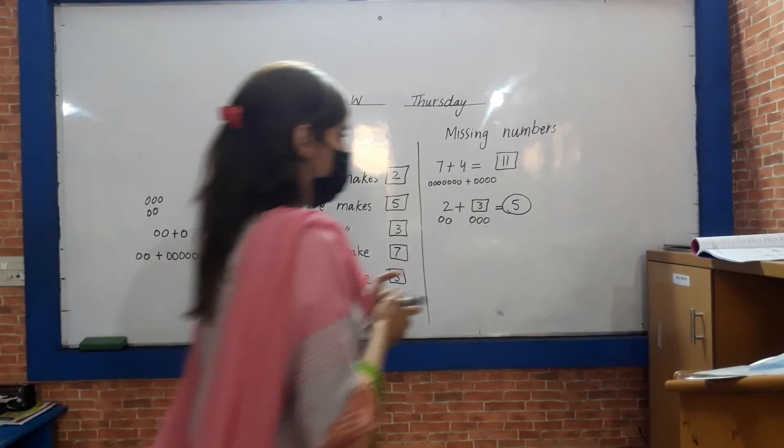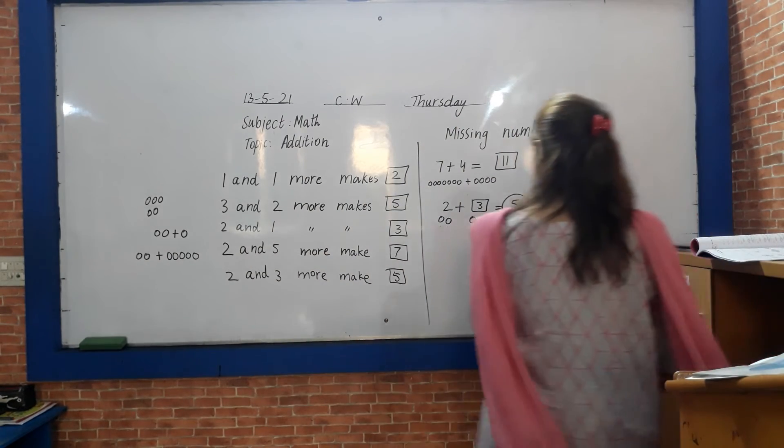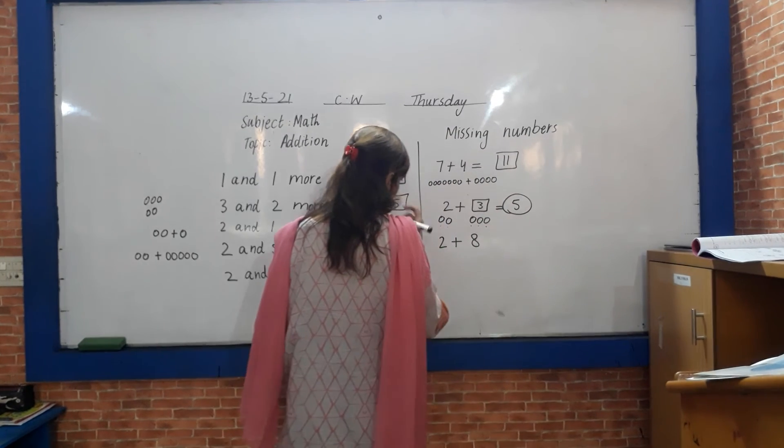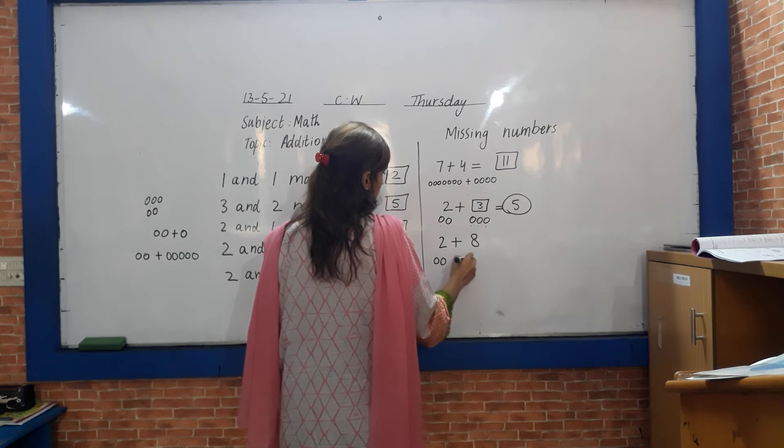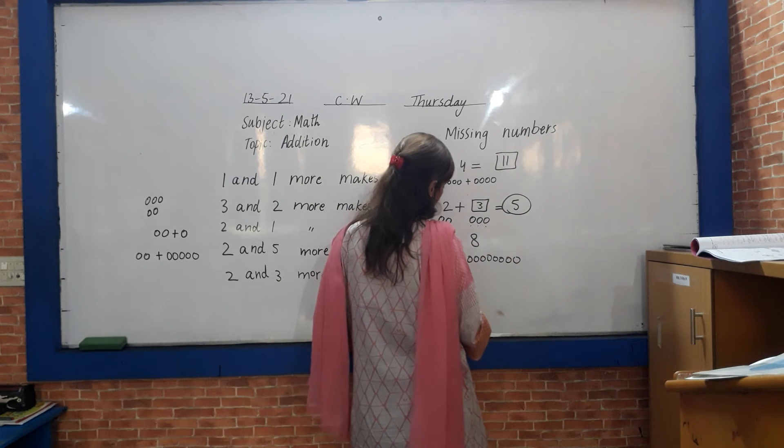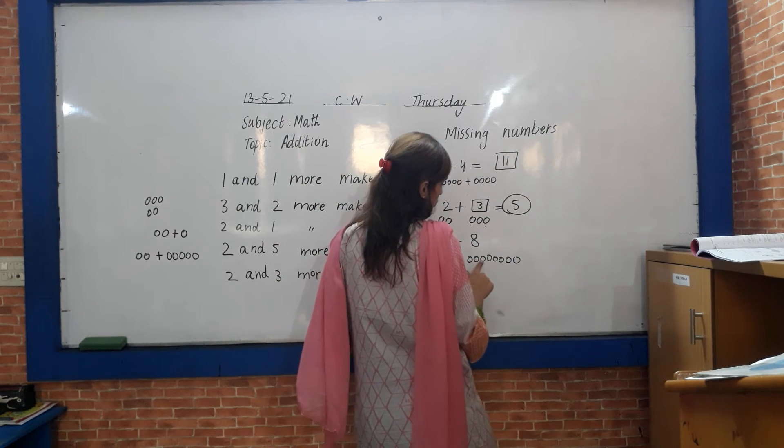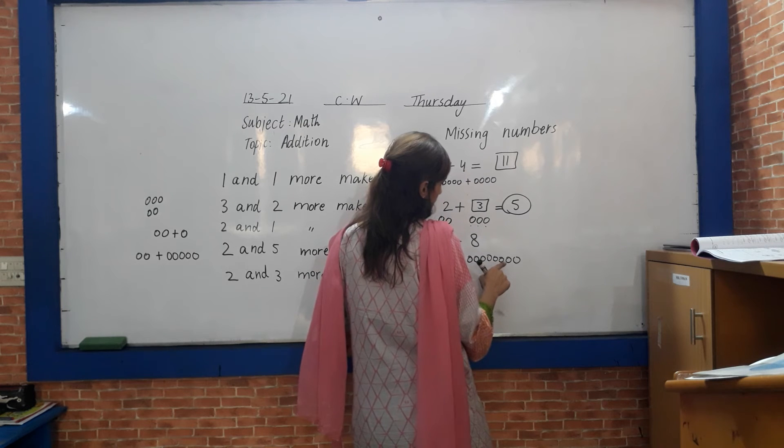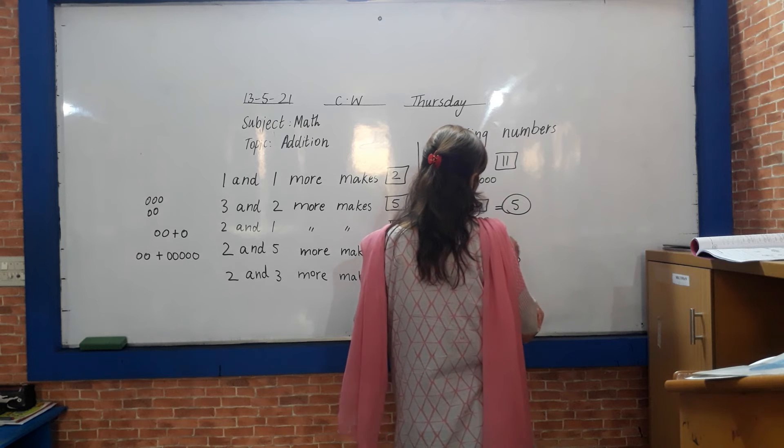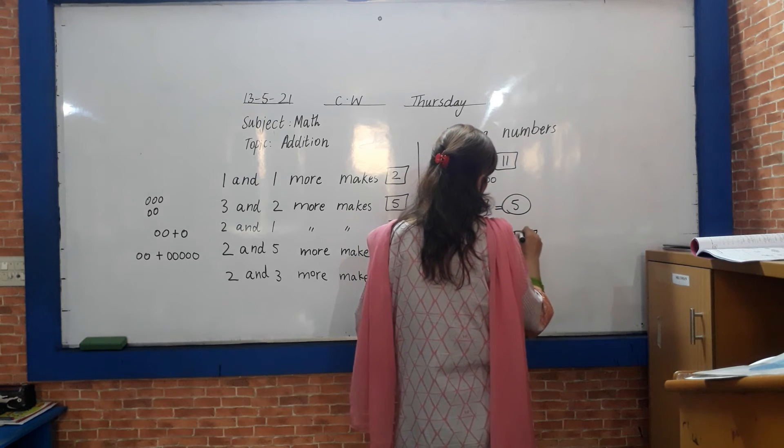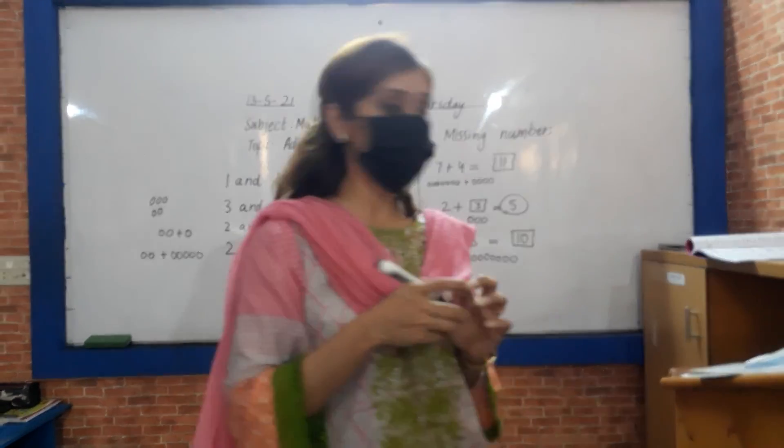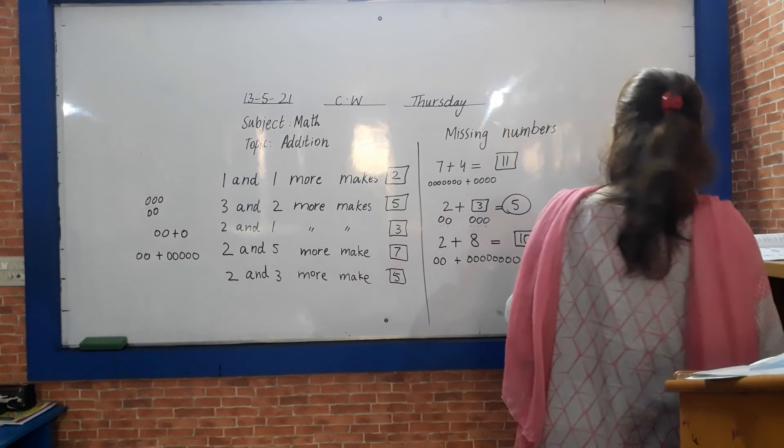Two plus eight. What do we do? We have to make two easier. Plus one, two, three, four, five, six, seven, eight. One, two, three, four, five, six, seven. One, two, three, four, five, six, seven, eight, nine, ten. Answer is ten. These are addition sums. Addition means add together.